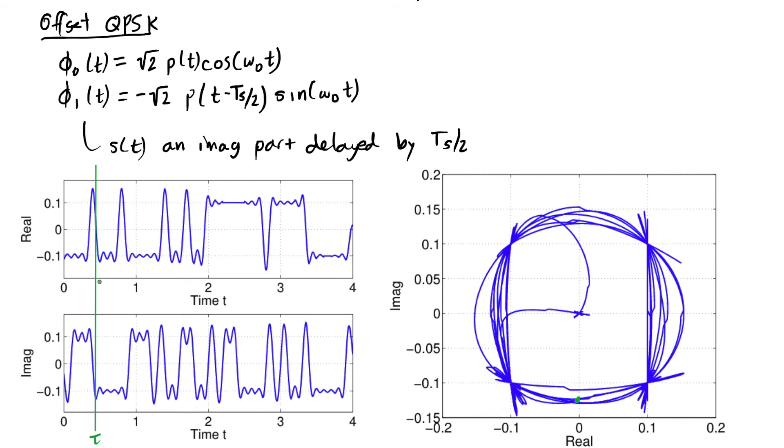As we move this forward in time, half a symbol period, that real part is going to go to negative 0.1. So it's going to be going in this direction. It's going to stay there until the real part switches back to positive 0.1. And it's going to do that. But you see that it's staying away from the origin.